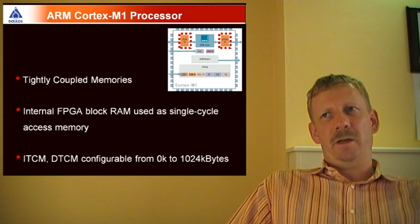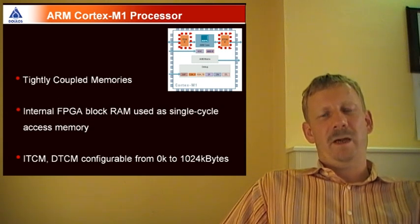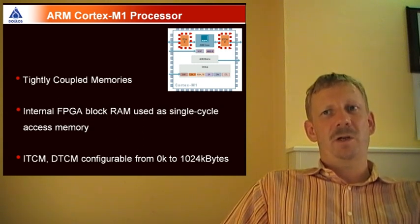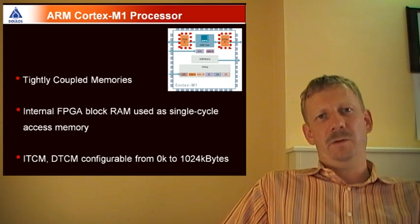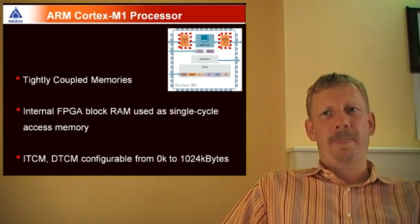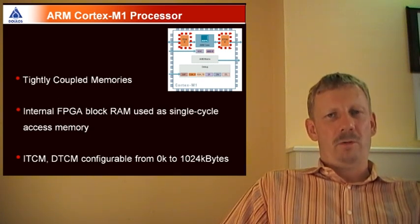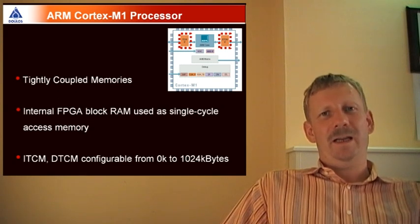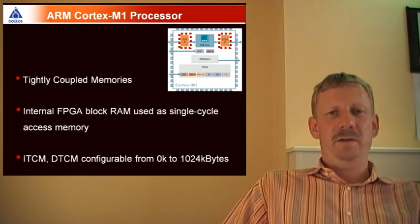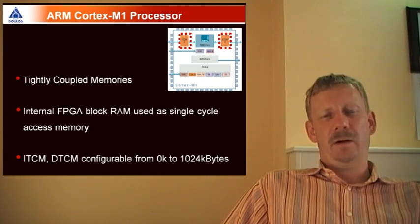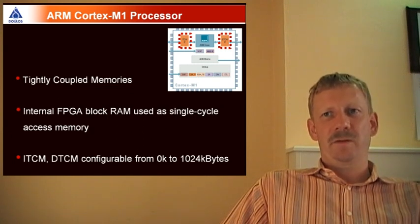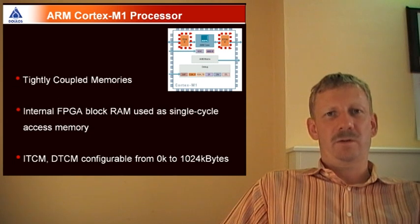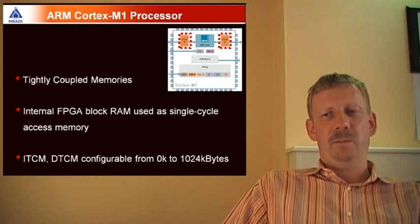The Von Neumann architecture has in the first one megabyte an exception. You can include, depending on the resources of your FPGAs, internal block RAM for tightly coupled memories, which can be between zero K and one megabyte. These tightly coupled memories for the instruction and data can be configured.